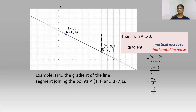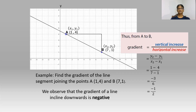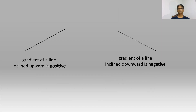This line, dear students, is a line inclined downwards, and you will notice that the gradient is negative. We observe that the gradient of a line inclined downwards is negative. The gradient of a line inclined upwards is positive and the gradient of a line inclined downwards is negative.